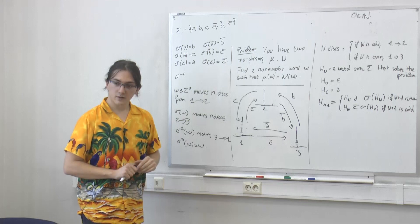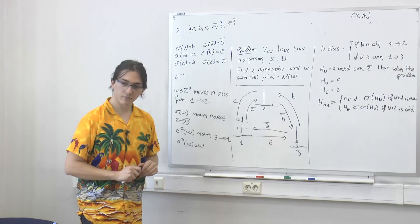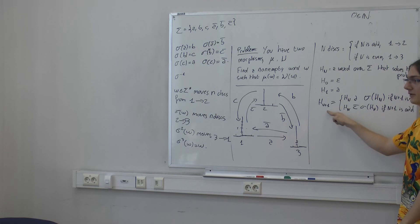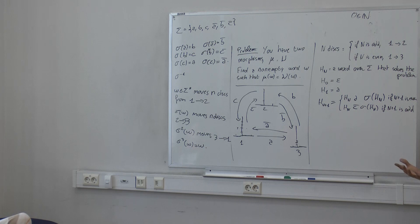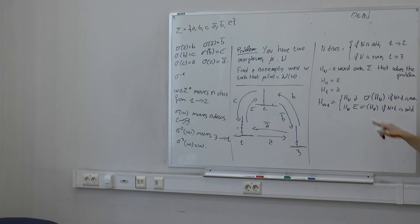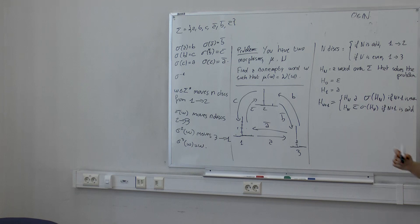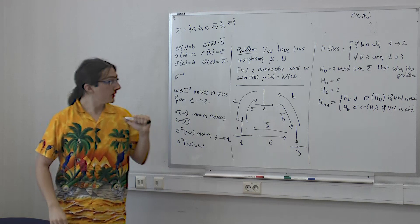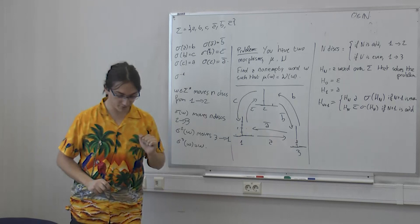I remind you of the Thue-Morse word: t_0 = a and t_{n+1} = t_n · t̄_n, which equivalently equals mu^omega(a) where mu(a) = ab, mu(b) = ba. All the t_i's are prefixes of the Thue-Morse word T by definition. So if there is a w-cube somewhere in T, it will appear in some prefix, hence in some t_n. We take the minimal such n.